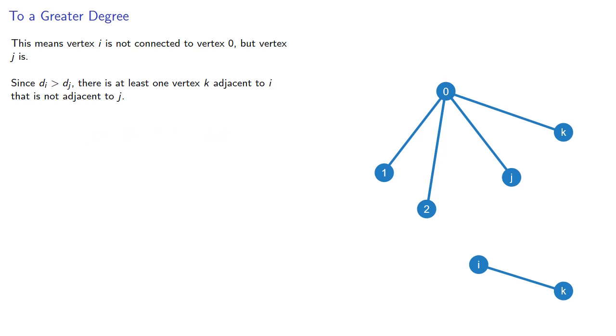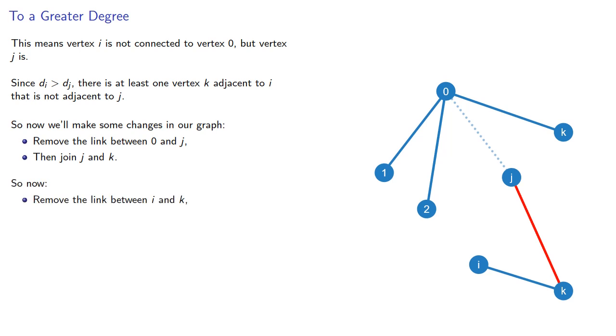So, we'll make some changes in our graph. We'll remove the link from vertex 0 and j, we'll join j and k, and now we'll remove the link between i and k and join i and our vertex 0. And here, we're leaving dotted lines where the edges used to be.